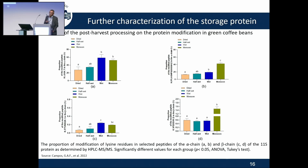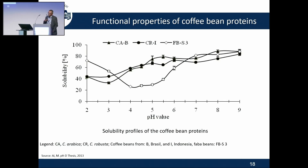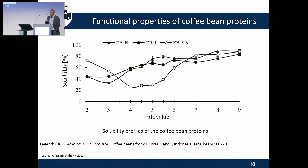Since we are talking about functional proteins, we need to go into functional properties. We started with the solubility test. Comparing to a typical fava bean protein, you can see we have very good solubility in the range of pH 4 to 6, which is the typical food processing pH. Solubility is the main property determining different protein properties — gelling, foaming, and emulsion. We also determined the antioxidative capacity of the proteins.